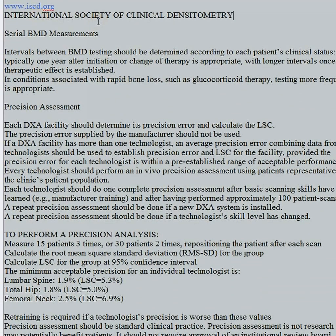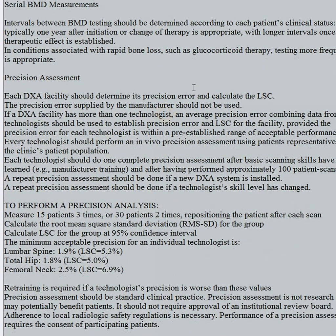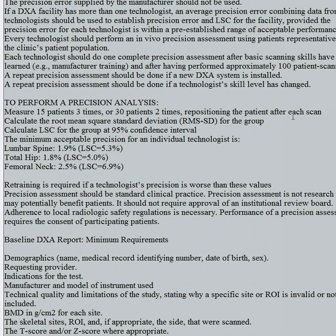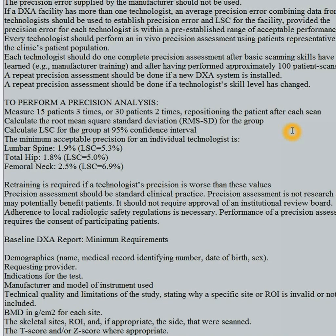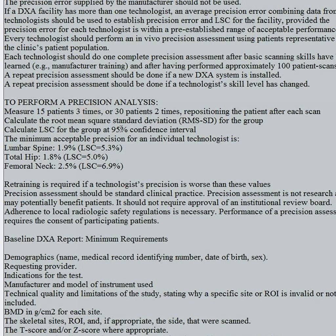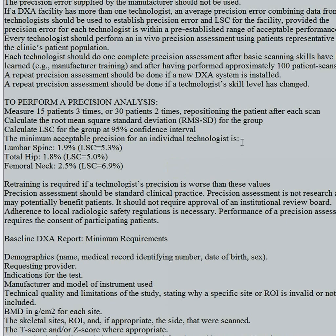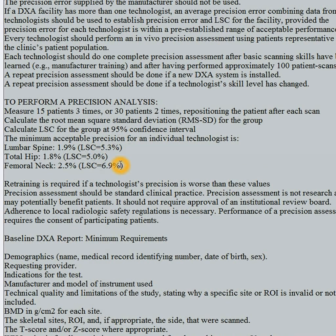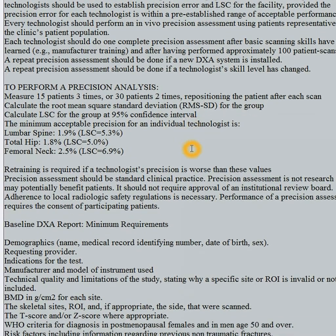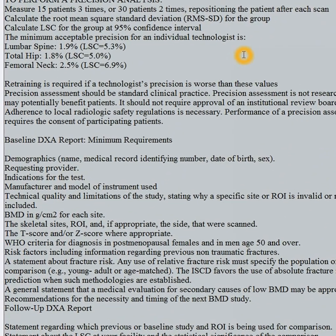From the International Society of Clinical Densitometry: this covers how to do least significant change calculations, which you need to determine whether a change from a prior study is statistically significant. Note that it can only be determined if done on the exact same unit. Basically, the technologist takes 15 patients scanned three times or 30 patients scanned twice, subtracts their differences, and multiplies that difference by a 95% conversion factor — approximately 2.8. Acceptable ranges of error are about 5% for the spine, 5% for the hip, and 7% for the femoral neck. You have to check the table for that particular patient to see if the change is significant.